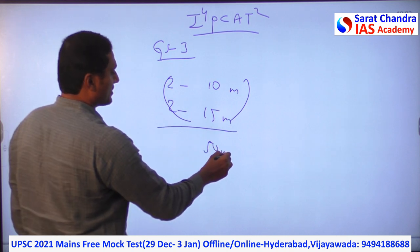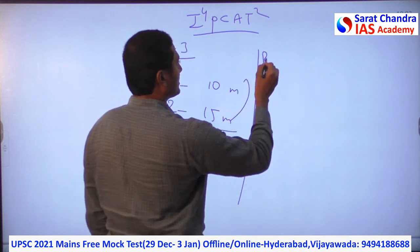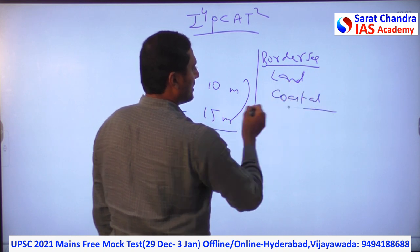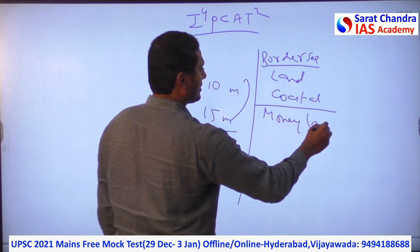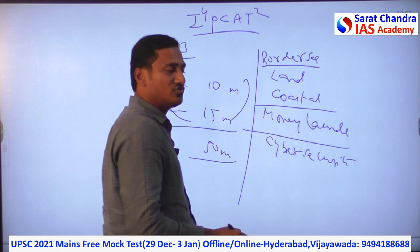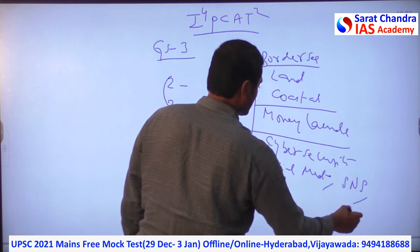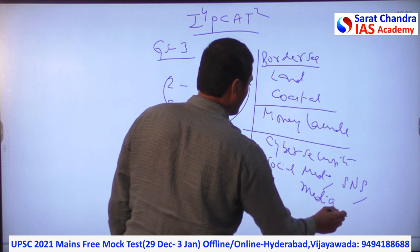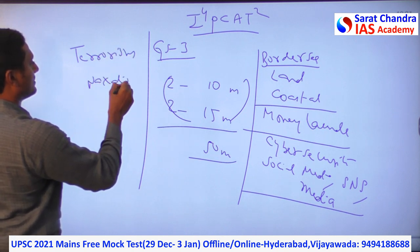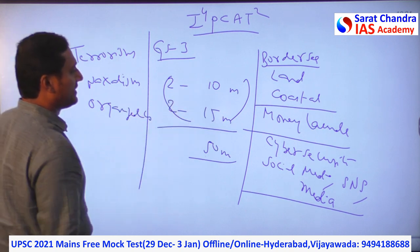So around 40 to 50 marks from internal security. And in internal security broadly, the questions would be from border security — land border or coastal border — money laundering, cyber security, security issues related to social media, terrorism, left-wing extremism, and organized crime. So these are the various topics from which questions will come.